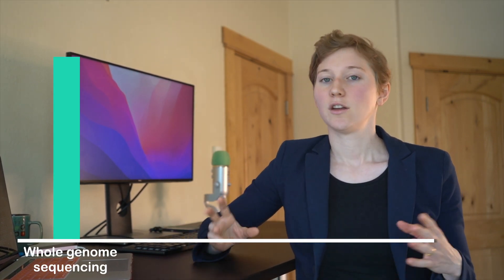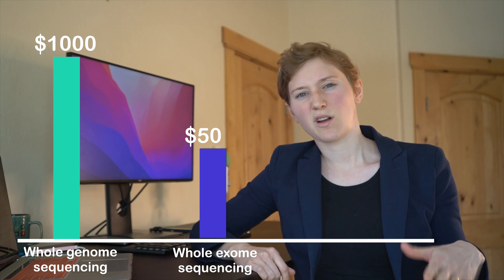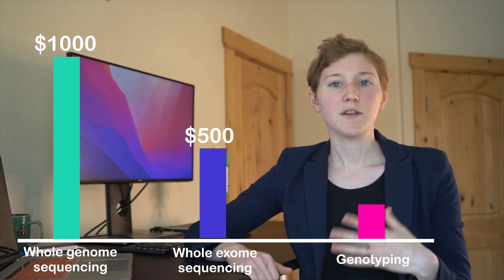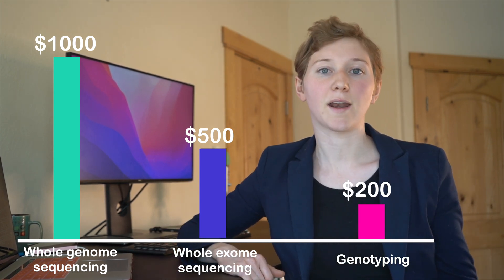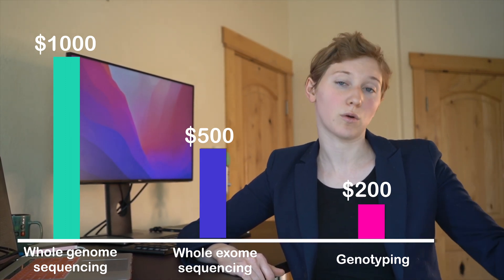As you can imagine, the genome coverage of these tests is related to how much they cost. For whole genome sequencing you're looking at around a thousand dollars. For whole exome sequencing, probably between 400 to 500 dollars, heavily dependent on the coverage you're getting. For genotyping, that's going to be 100 to 200 dollars. It's worth noting that as sequencing technology advances, the costs of whole genome and whole exome sequencing continue to drop.